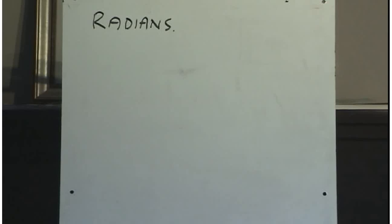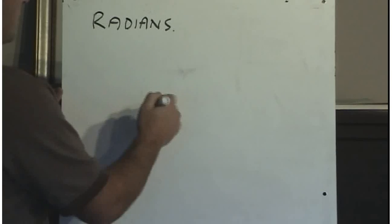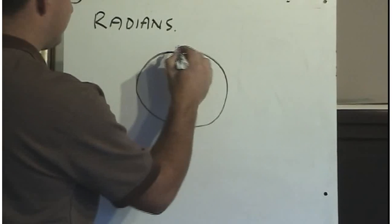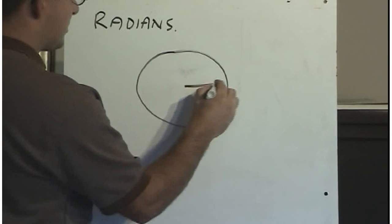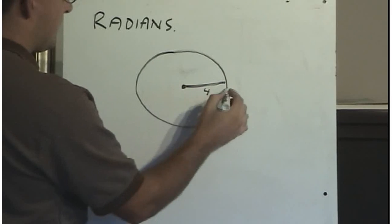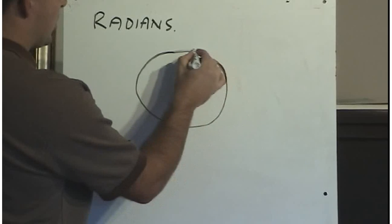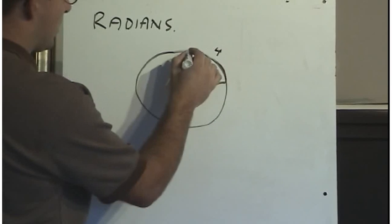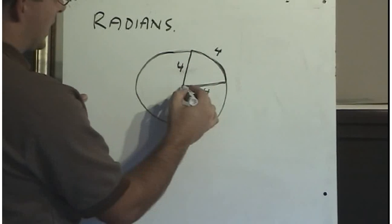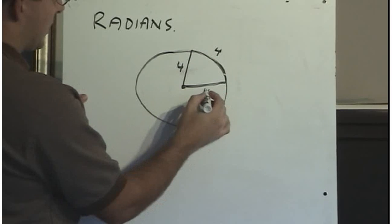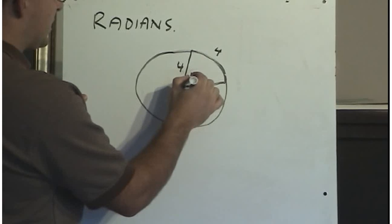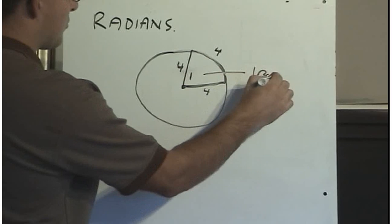Let me explain how we define one radian. Say I have a circle with a radius of 4. If I went around its arc length that same length — 4 — and then constructed another radius, so I've got a pi-shaped piece of my circle, where the radius is equal to its arc length, then the angle in here is 1 radian.